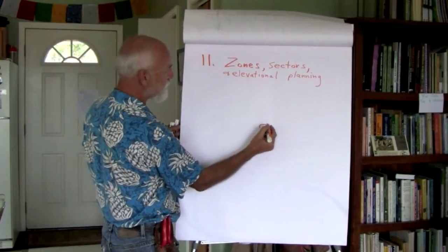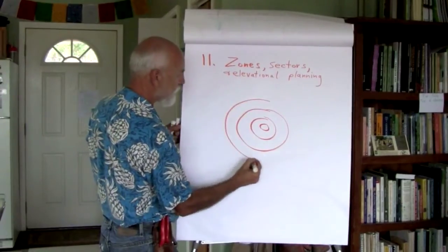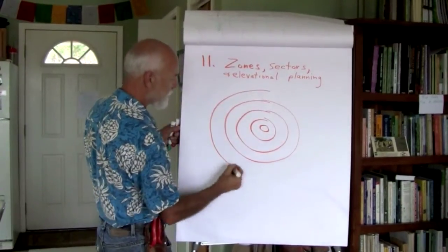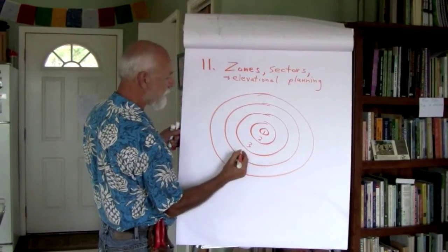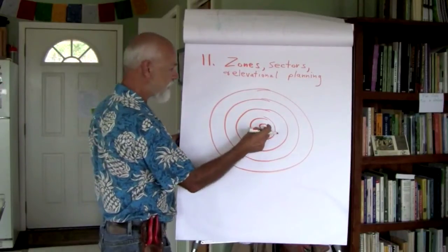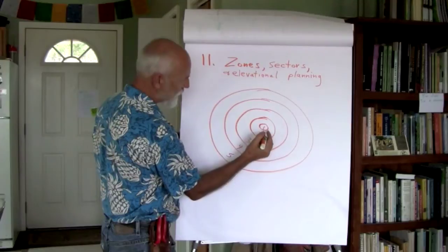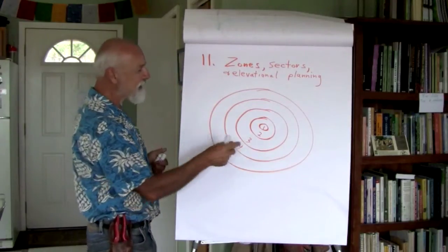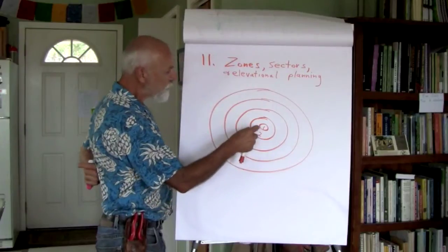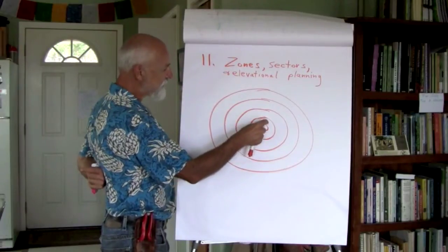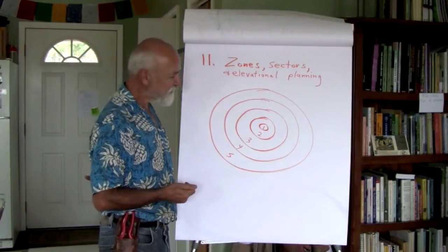Zones is the permaculture concept of radiating zones out from the homestead, the yard, the residence, and you place, again here's your principle of relative location partly, you place elements in the system in relation to these zones by how often you have to visit it.